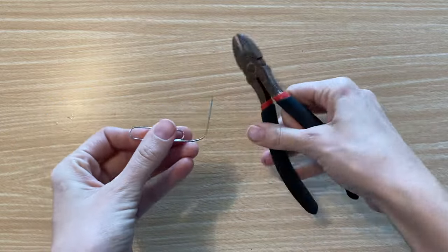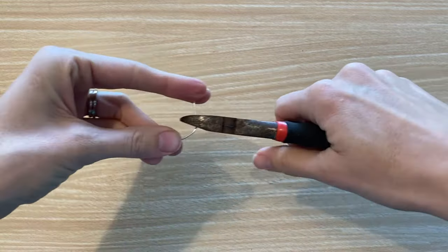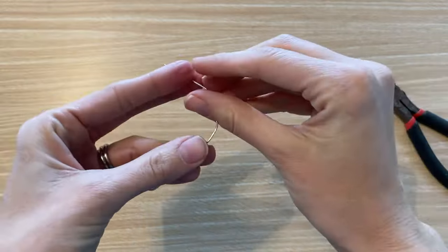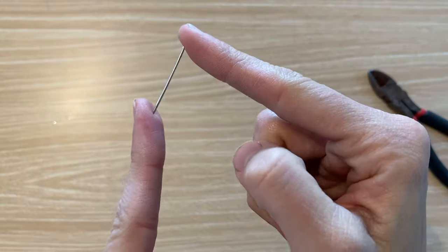Take a pair of wire cutters and use them to cut about a one inch straight piece off of a large paper clip. This will be the needle of your compass.